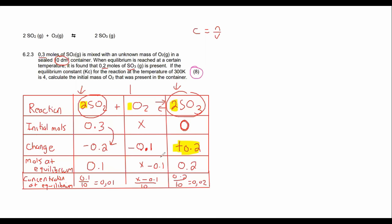So I can say 0.1 / 10 here which will give me 0.01. And then for this one I can say (x - 0.1) which is the moles divided by the volume which is 10.